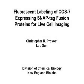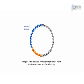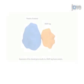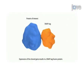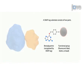SNAP and CLIP tag protein labeling systems enable the specific covalent attachment of virtually any molecule to a protein of interest. The gene of interest can be cloned into the vector on either side of the tag. Expression of the cloned gene results in a SNAP tag fusion protein. The SNAP tag substrate consists of two parts: the benzoyl guanine, which is recognized by the SNAP tag, and the functional group.